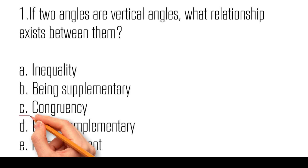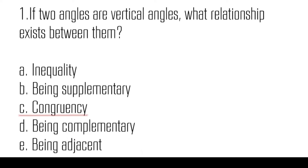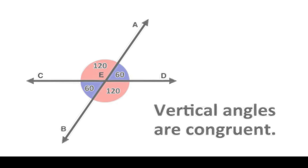If two angles are vertical angles, the relationship that exists between them is congruency. This means that the angles have equal measures. Vertical angles are always congruent due to their position. They are formed by the intersection of two lines, creating opposite angles with equal measures. This geometric property is a result of the angles sharing a common vertex and being on opposite sides of the intersecting lines, leading to their equal measures.